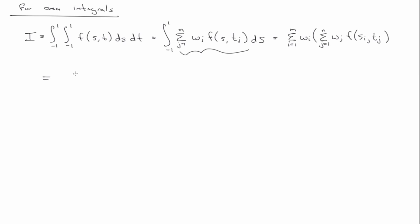So, that equals the sum from I from one to M, J from one to N, W_I, W_J, F(S_I, T_J).